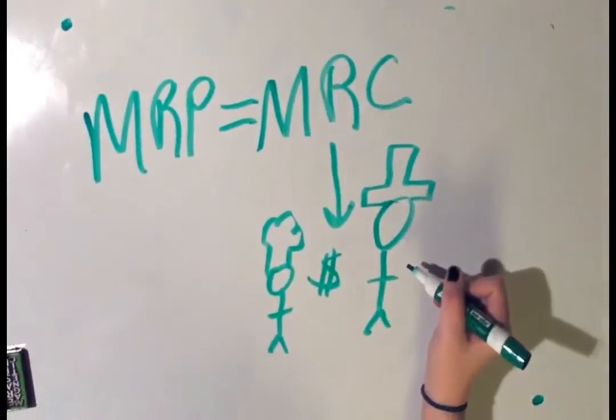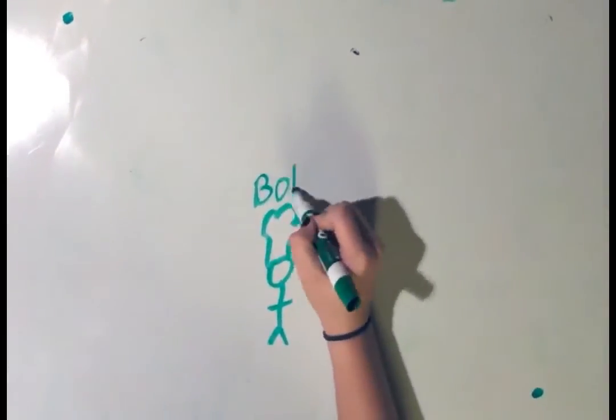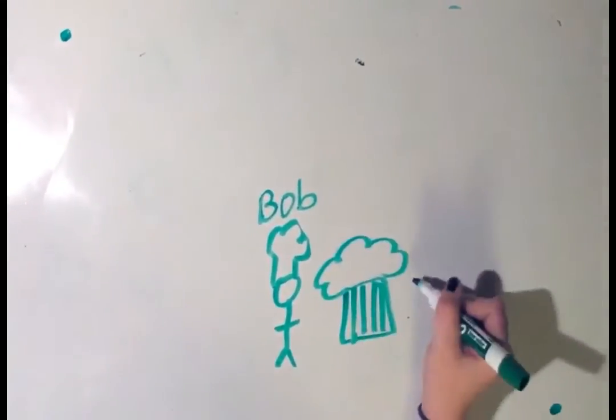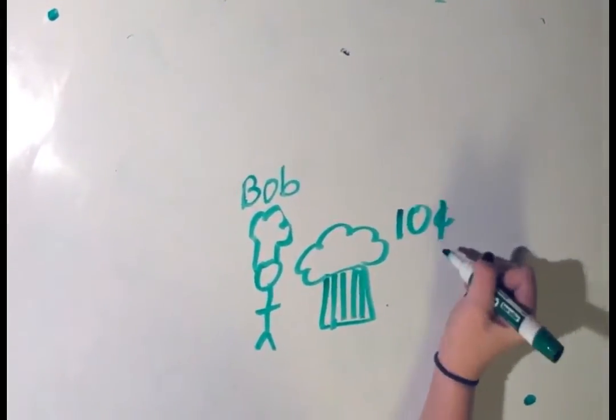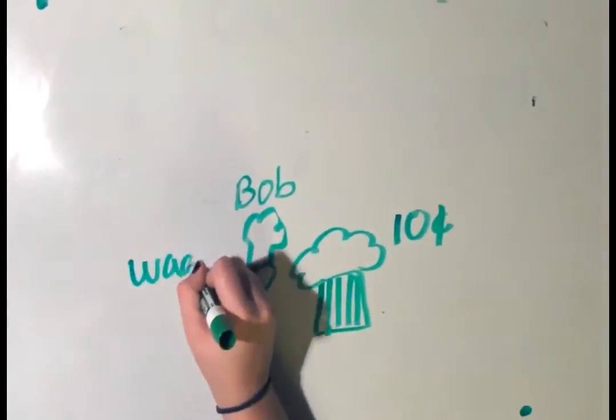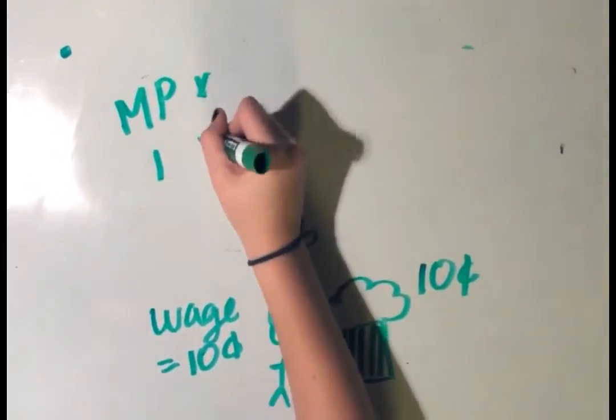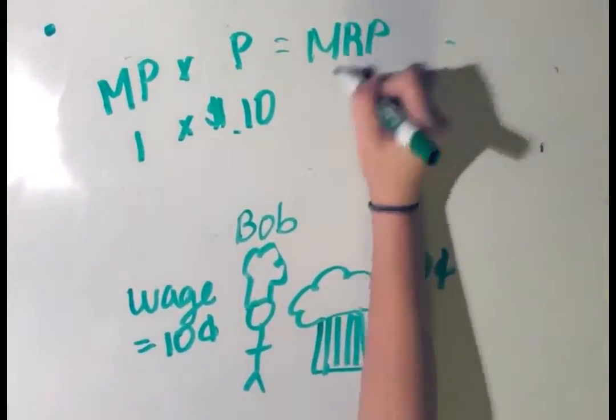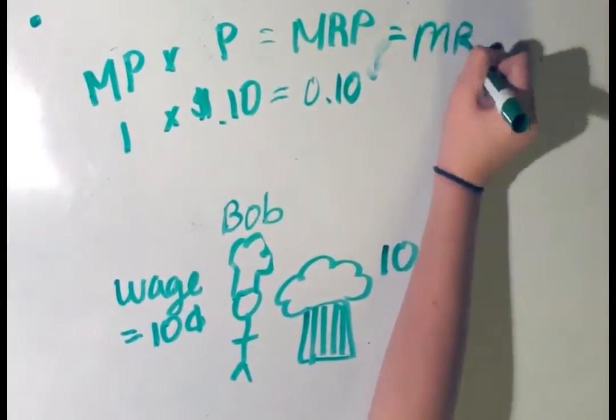Let's step into the life of Bob the Muffin Man. Bob is the last worker hired by Arturo. In one day, Bob can bake a grand total of one muffin. Thus, his marginal product is equal to one. But Arturo sells his muffins for ten cents each. Thus, Bob's marginal revenue product is one times 0.1, or 0.1. This means that Arturo hires Bob, as Arturo pays his workers ten cents a day.